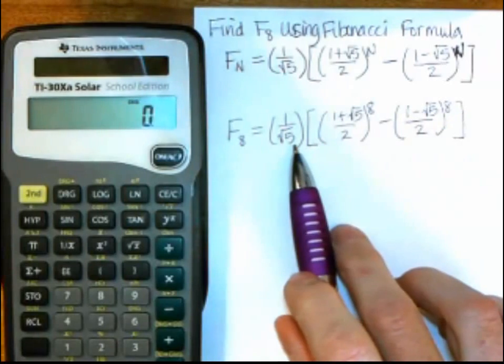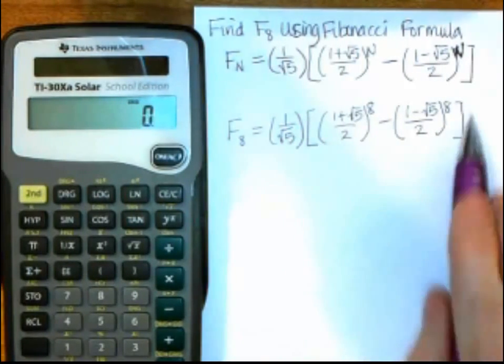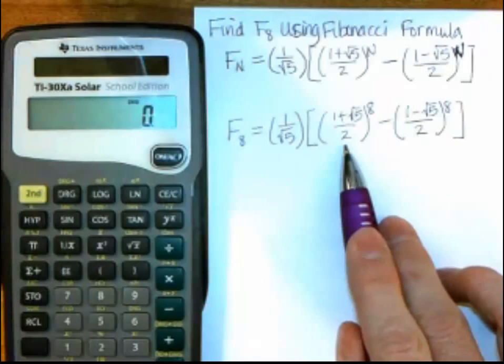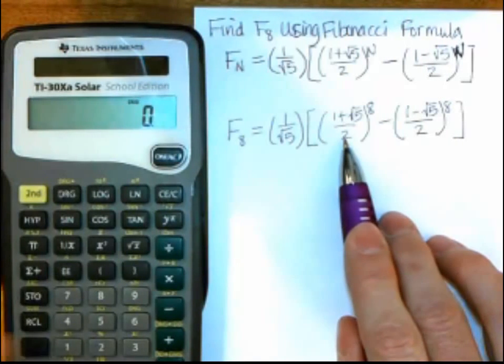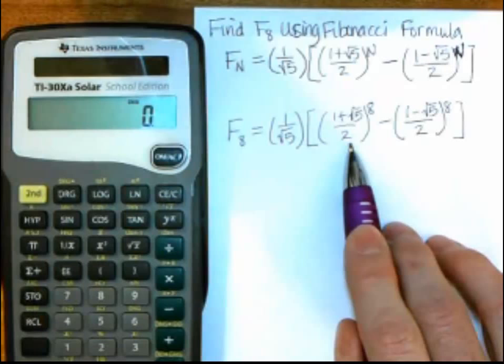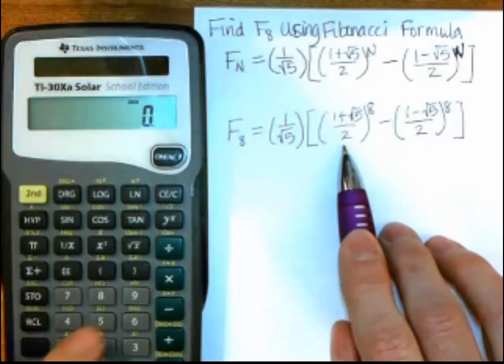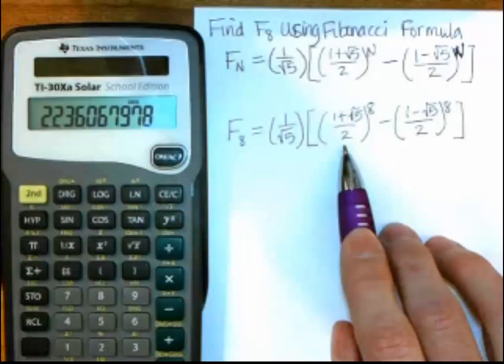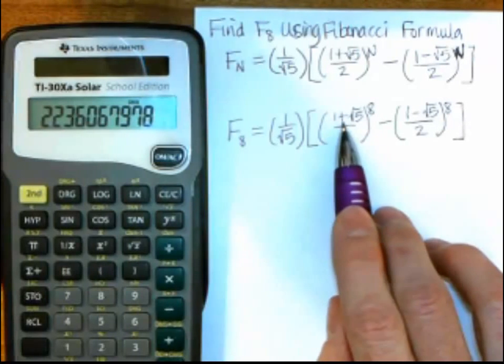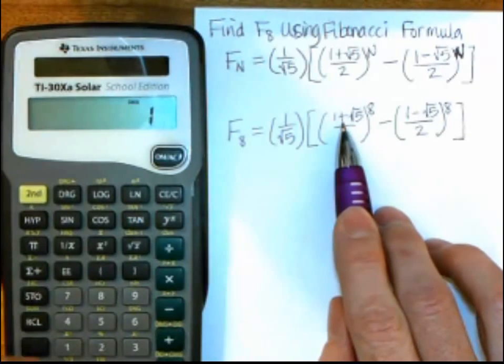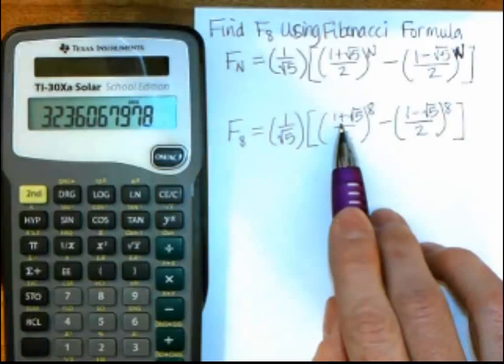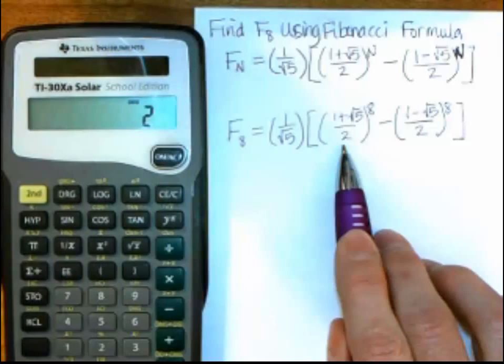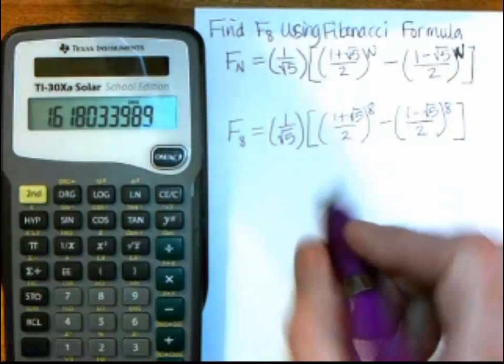Now I want to do it on the calculator. So first thing I have to do is work inside the big parentheses and then inside either one of these two, but I'll start with this one. I want to do 1 plus the square root of 5 over 2. So on this calculator, I type in the 5 first, do the square root button, and that gives me the square root of 5. And now I want to add 1, so plus 1, and I get the 3.236, and then divide by 2 equals.